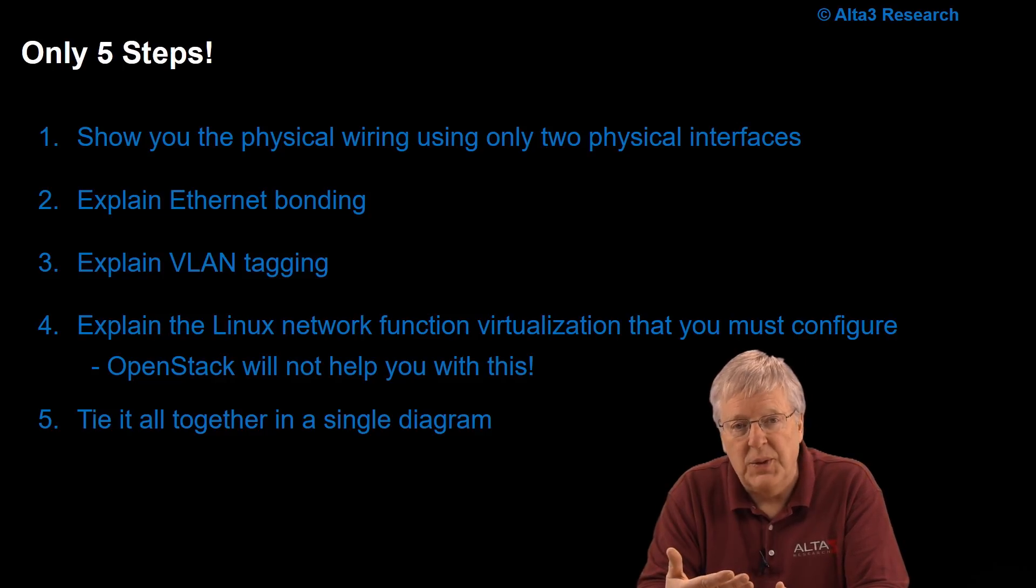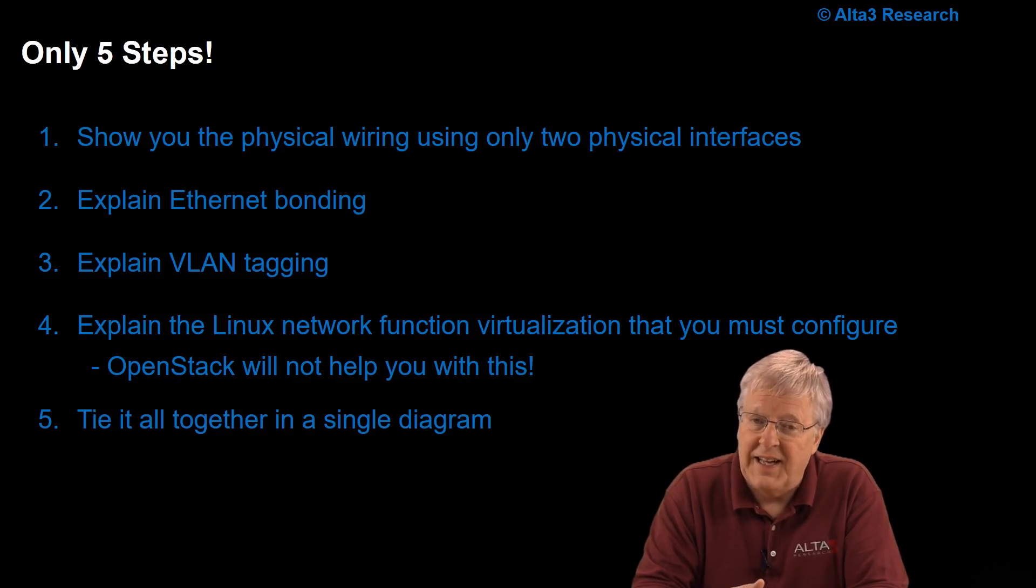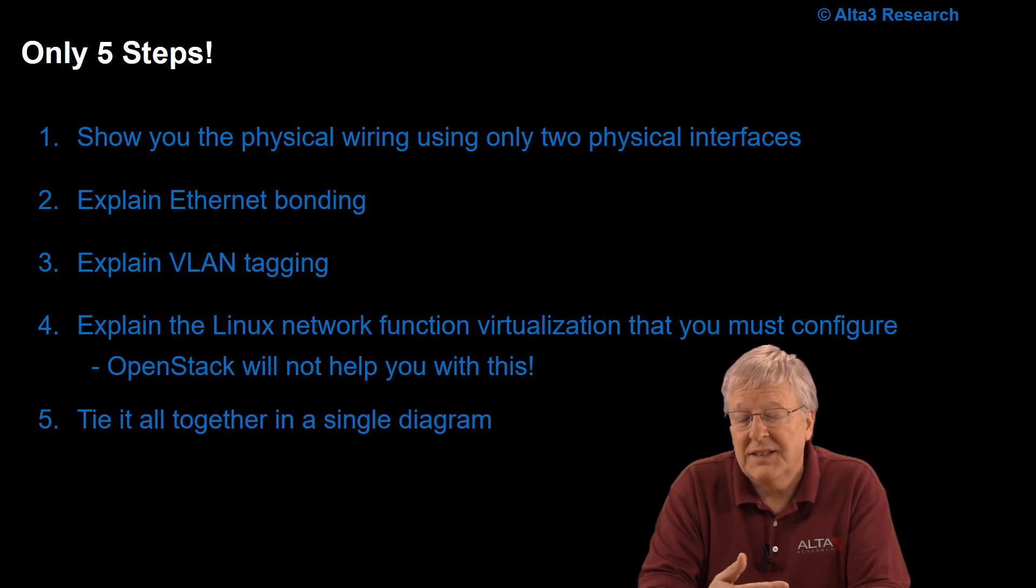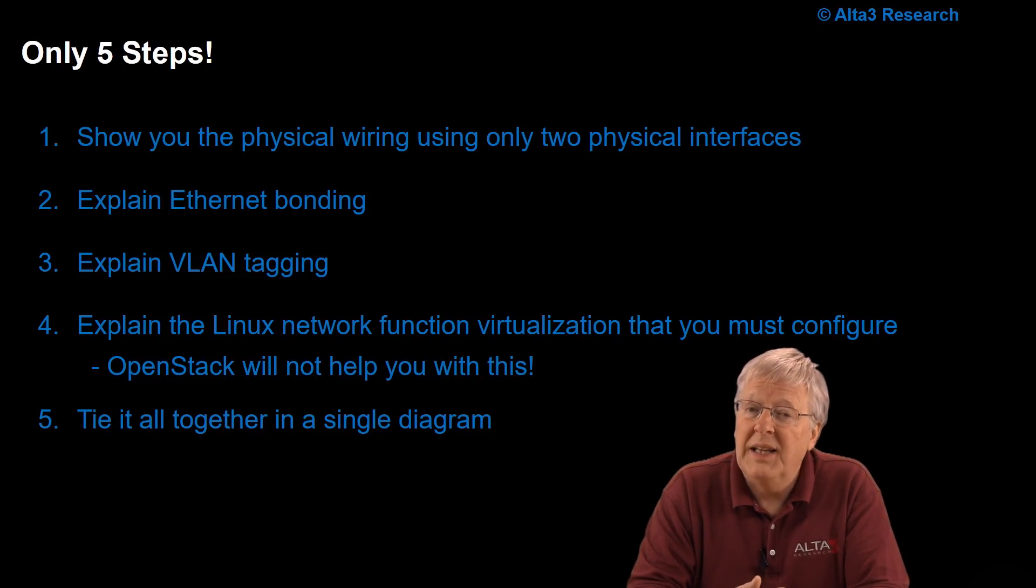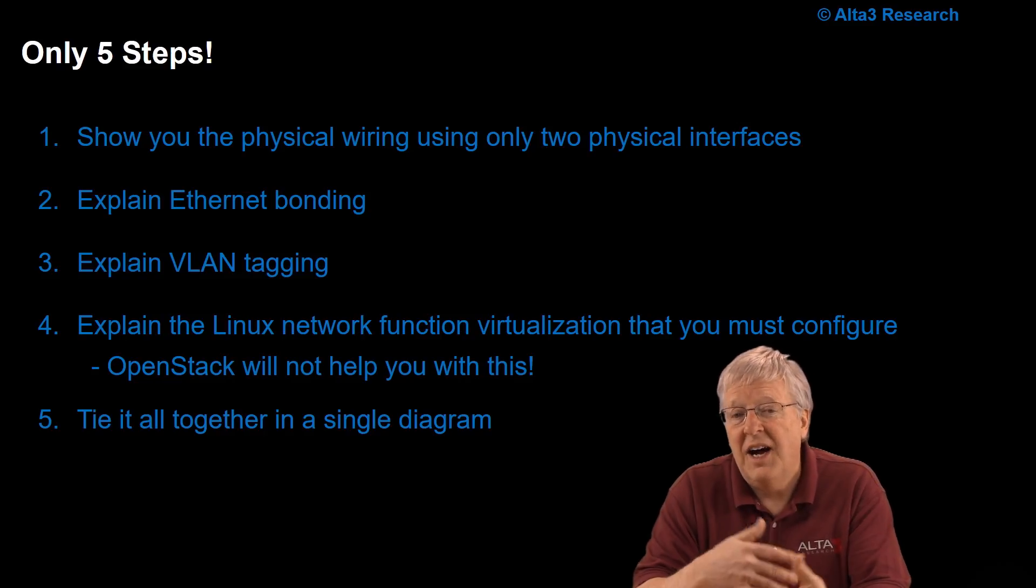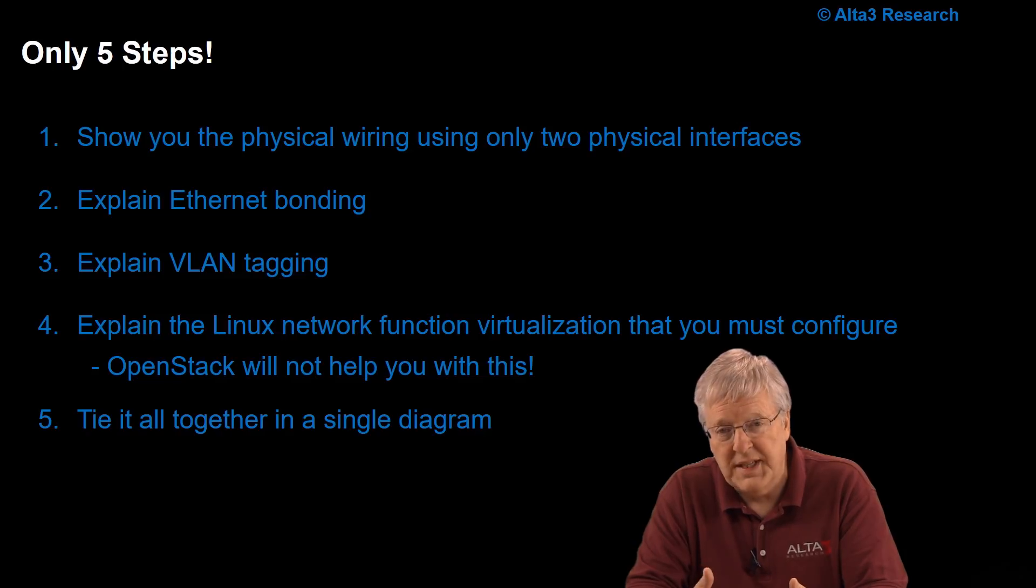That's why we need two. Step three is we'll explain Ethernet tagging. That's why we only need two interfaces. Step four will explain Linux network function virtualization and the things that you have to configure. These are the things that OpenStack will not help you. You have to put this part in place. And then lastly, I'll tie it all together with a single diagram.